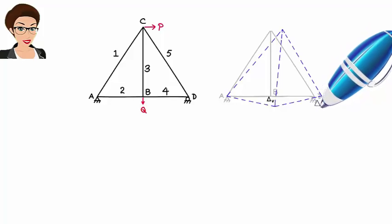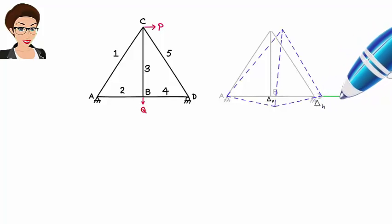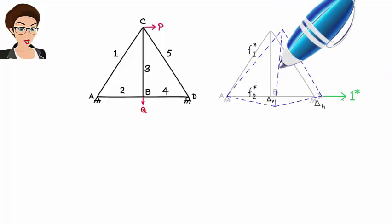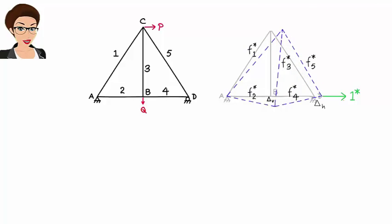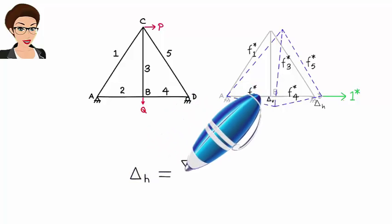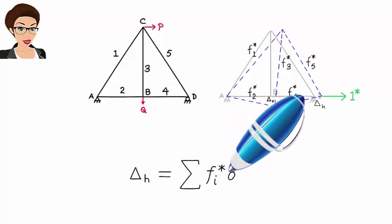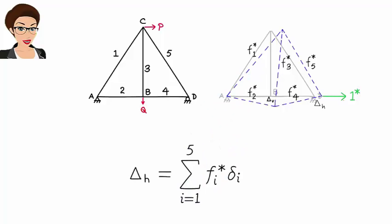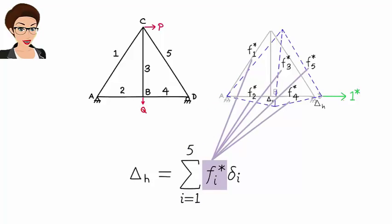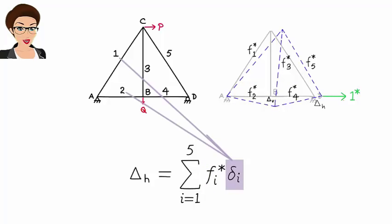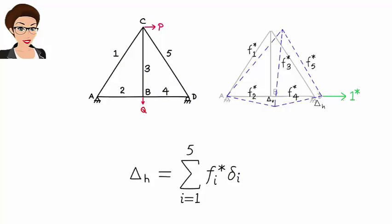For example, to calculate horizontal displacement at d, we place a horizontal unit virtual load at d and calculate member forces due to that load. Then horizontal displacement at d equals the sum of f-star-i times delta-i, where f-star-i is the virtual force in member i due to the unit virtual load at d, and delta-i is the elongation of the member due to the real loads. Let's work through an example to better illustrate the method.